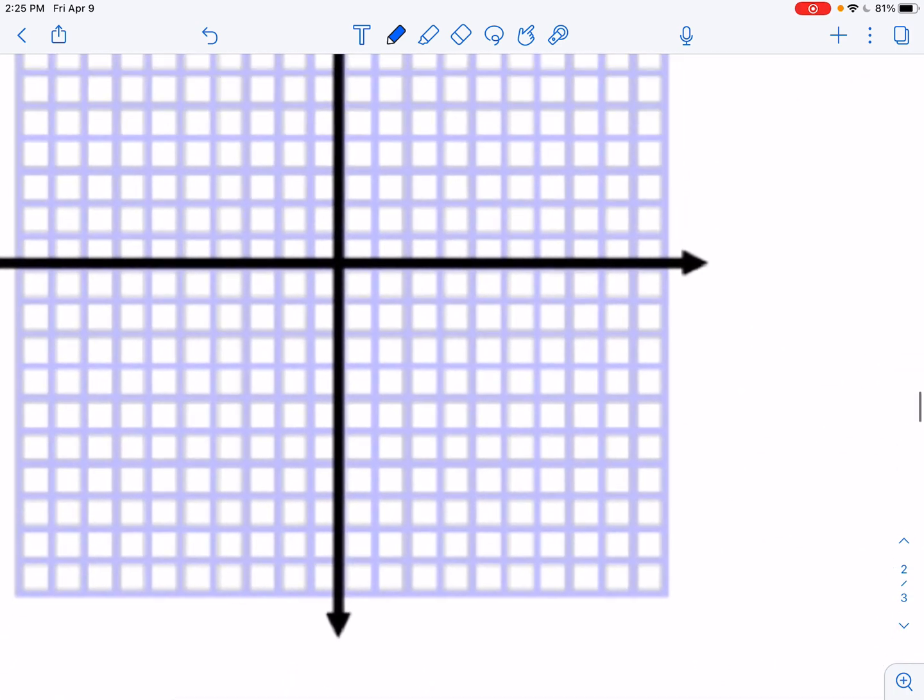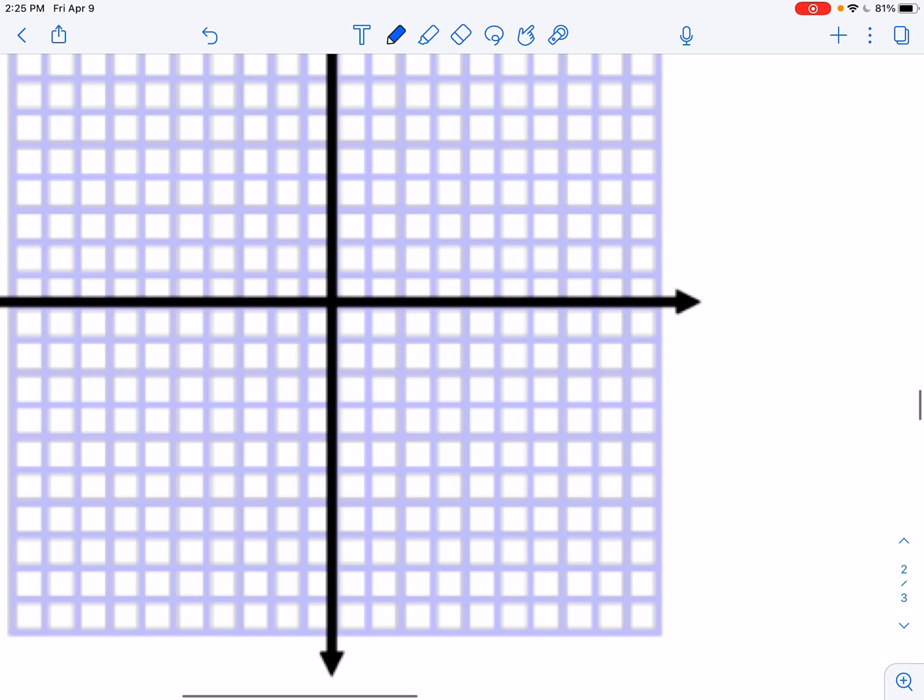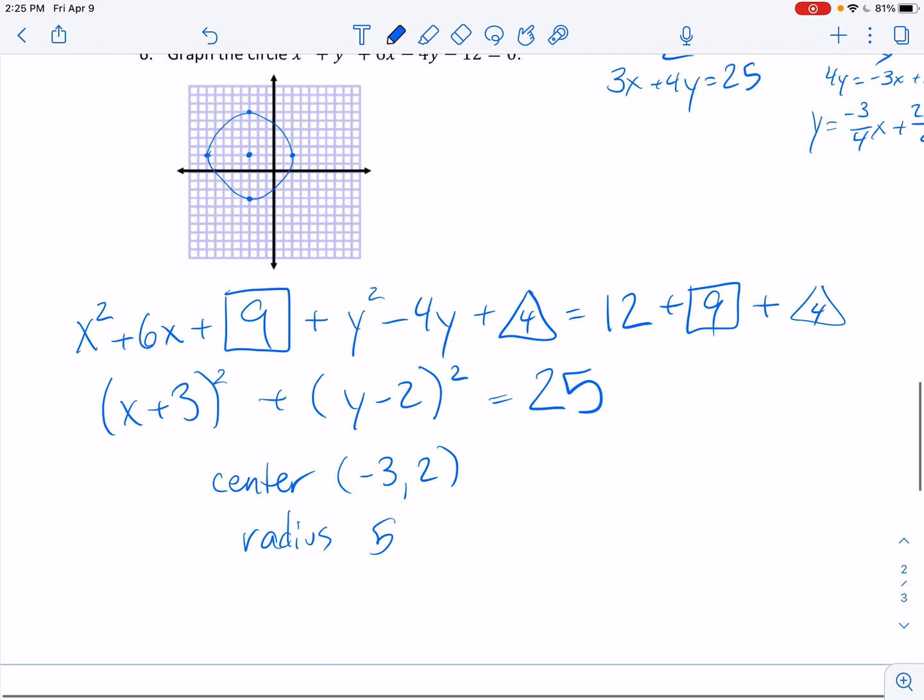So I can graph that negative 3 positive 2. And then I need to move 5 in every direction. You get to hear me count. You are so lucky. I think that's somewhat correct. And then pretend I can, well okay, that's a terrible circle, but whatever. I don't really care. I mean, I do, but I don't.